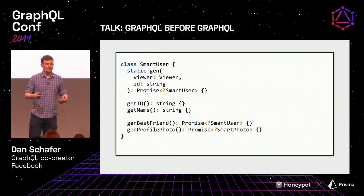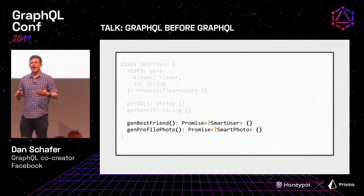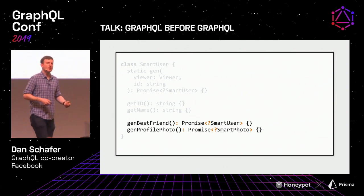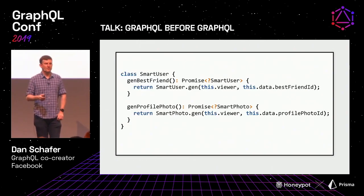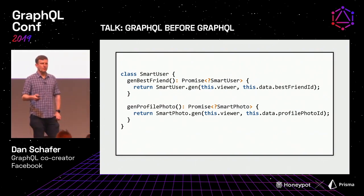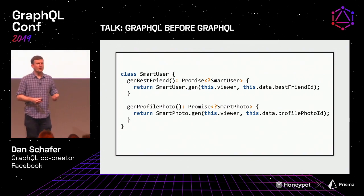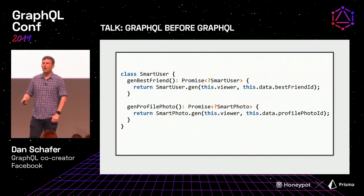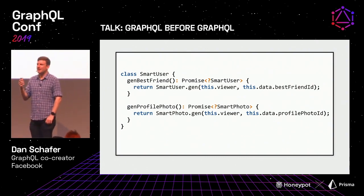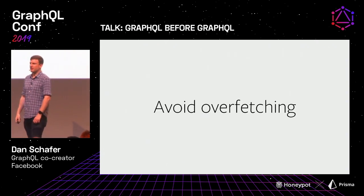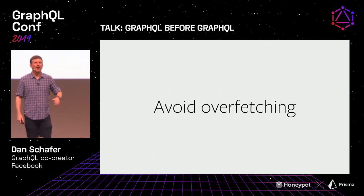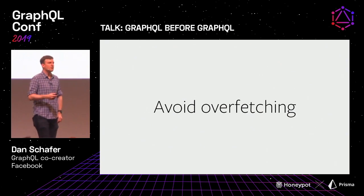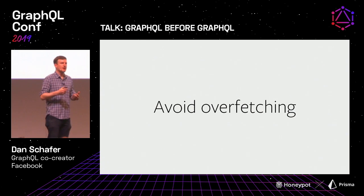You can also augment this object with additional capabilities — methods that say a user has a best friend you should be able to fetch, an asynchronous promise returning a nullable user; or a profile photo. Notably, all of their methods stay in the smart data object universe and use these gen methods as well. And one of the nice things this gives you is avoiding overfetching. My mock didn't have photos in it, so if I never call gen profile photo, I never run that asynchronous method, never hit the DB — overfetching avoided.